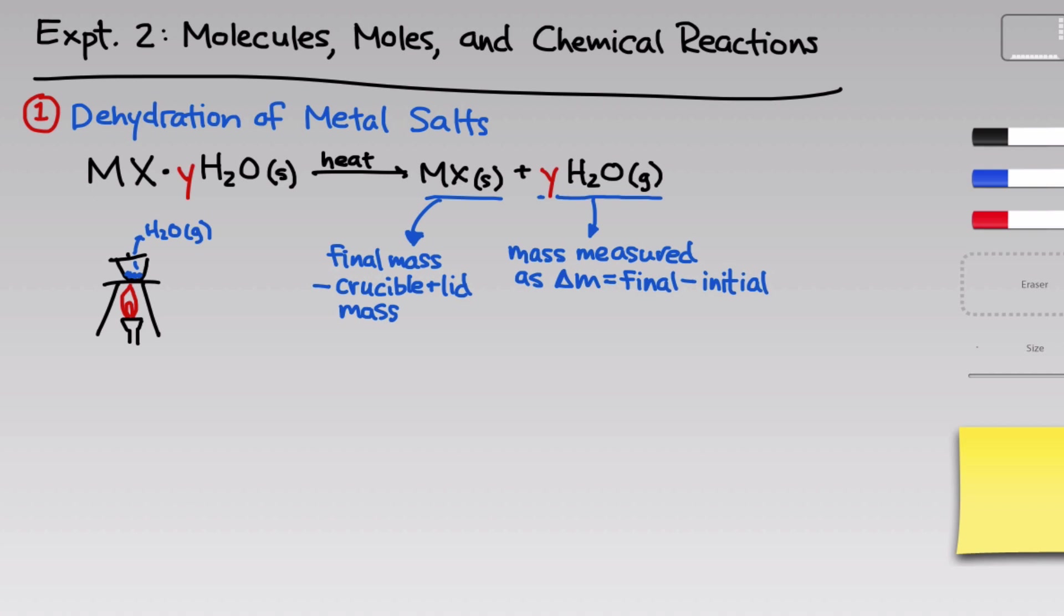The ratio of the masses doesn't tell us much because the molar masses of MX and H2O are different. We can't simply ratio the masses of water and MX to determine the moles of H2O per mole of MX, which is really what we're after, this number Y. So we need to convert each of these masses to moles.